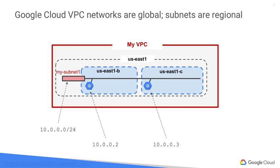You can also have resources in different zones on the same subnet. You can dynamically increase the size of a subnet in a custom network by expanding the range of IP addresses allocated to it, and doing that doesn't affect already configured VMs.